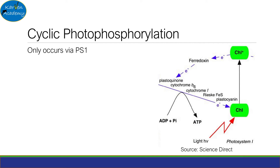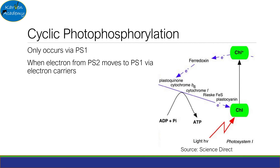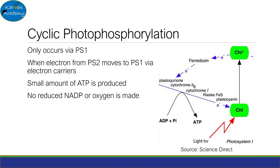The electrons released from Photosystem 2 are passed into Photosystem 1 via electron carriers, as I described previously. As they do, a small amount of ATP is made. This way of ATP production does not produce reduced NADP, i.e. NADPH.